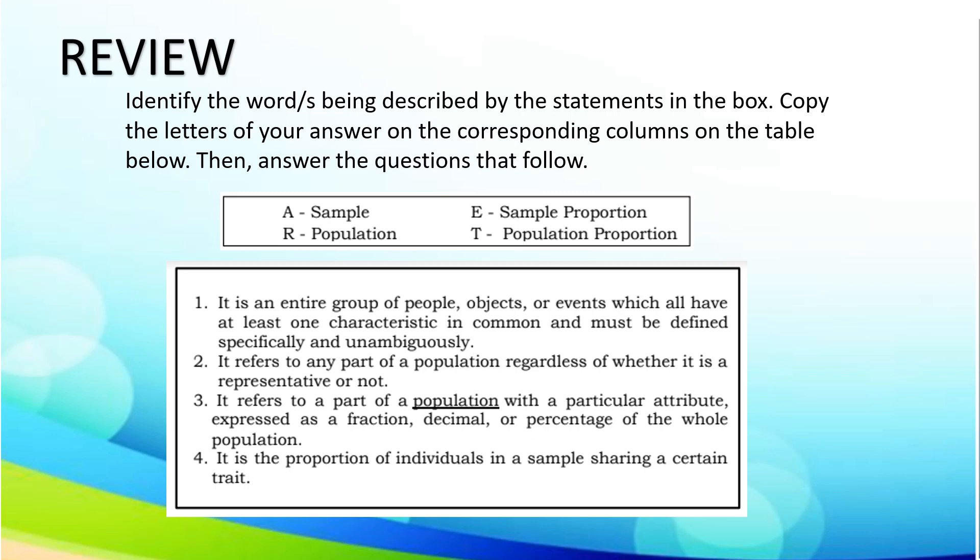Number 1: It is an entire group of people, objects, or events which all have at least one characteristic in common and must be defined specifically and unambiguously. Answer: R, Population.